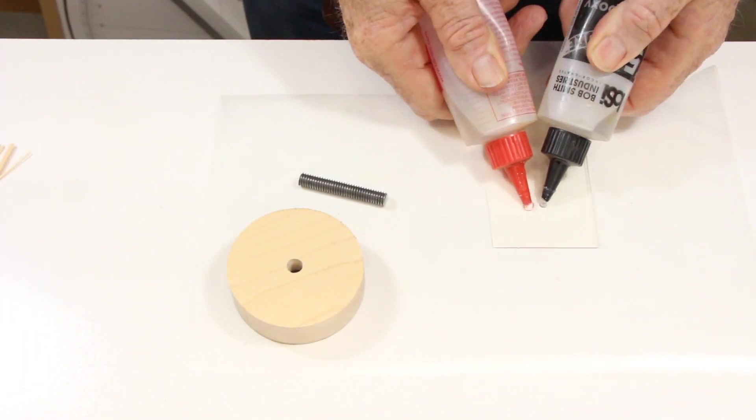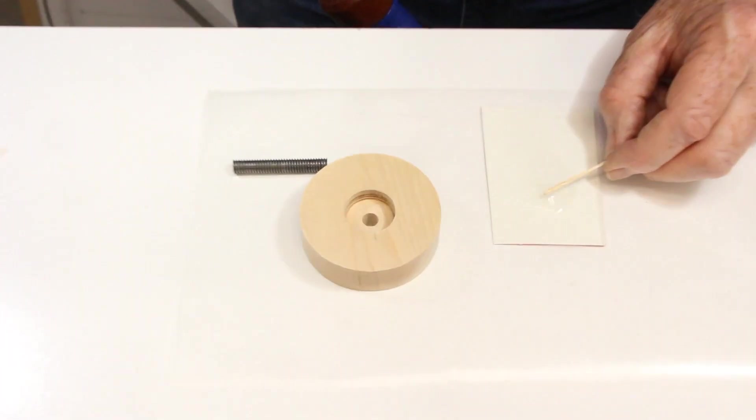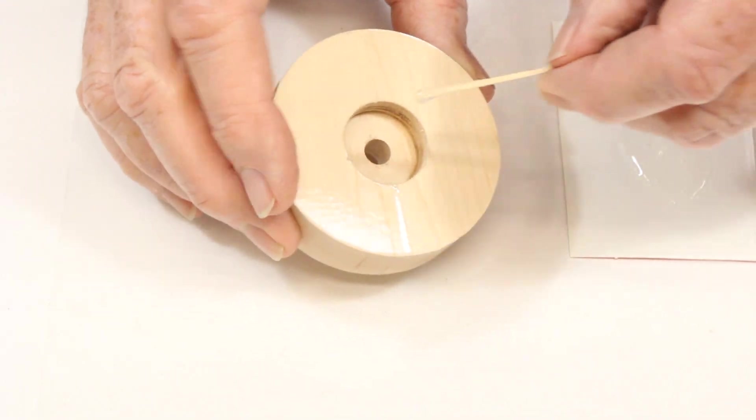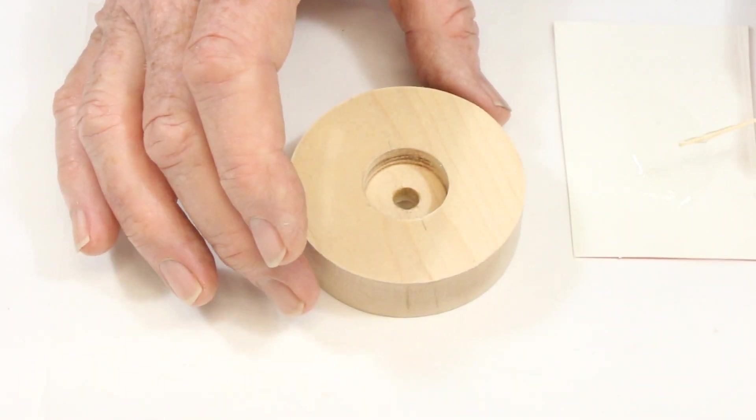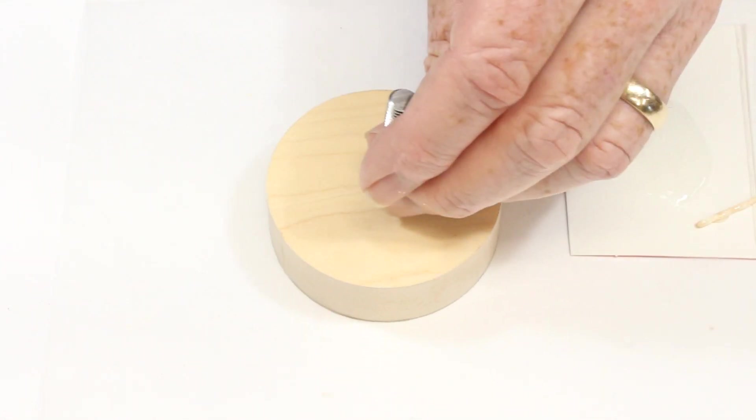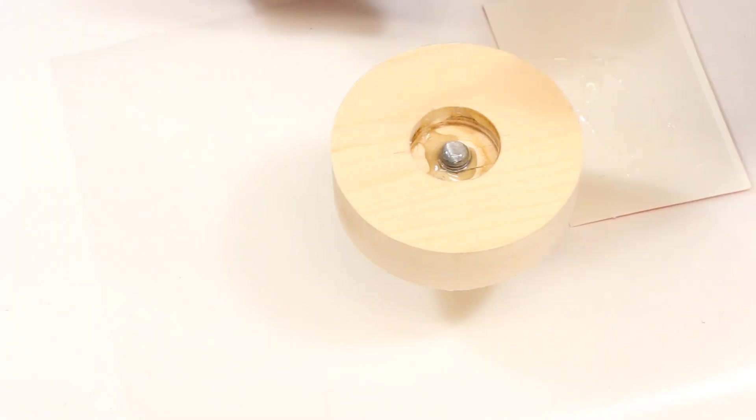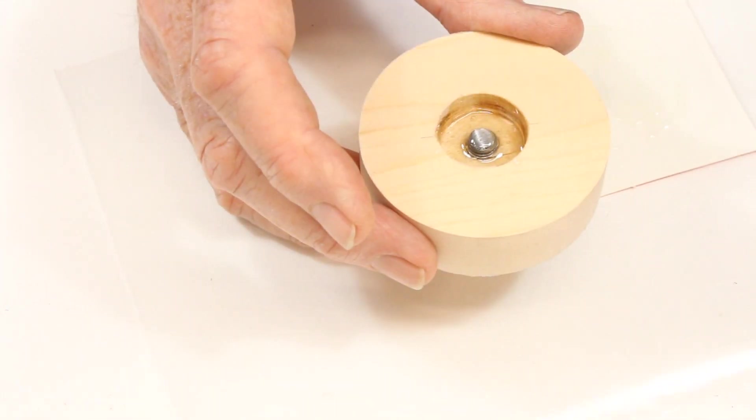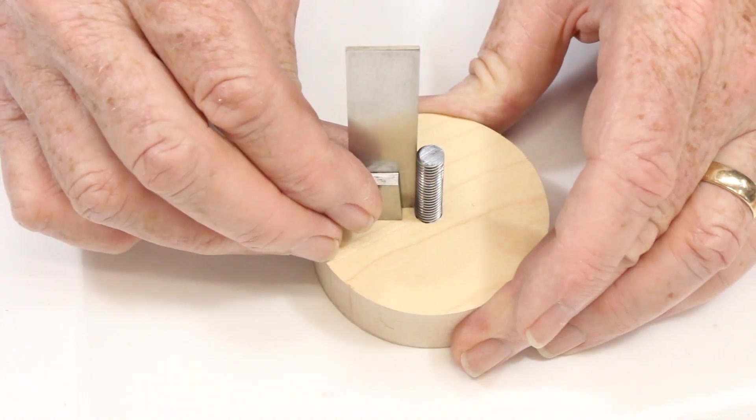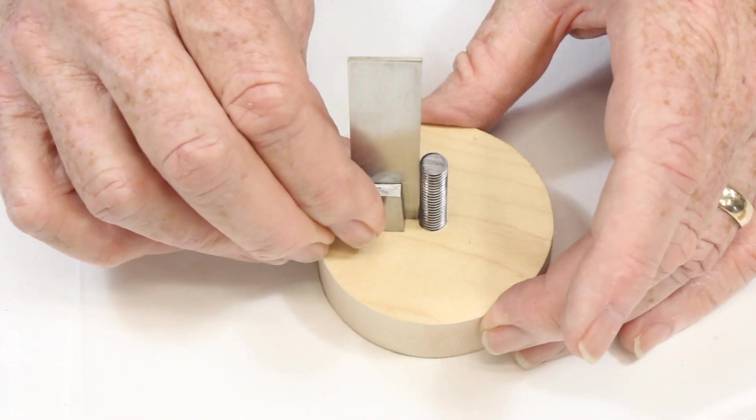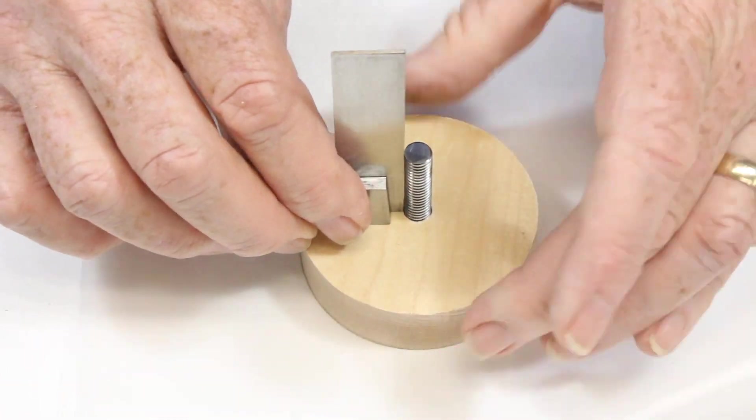Next, I'm going to add a little epoxy. Mix some 5 minute epoxy and set the threaded rod, the washer, and the nut firmly in place. Check that the threaded rod is perfectly perpendicular. Let the epoxy cure for an hour or more.